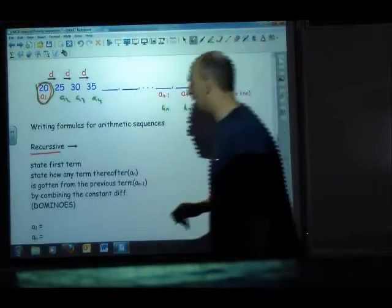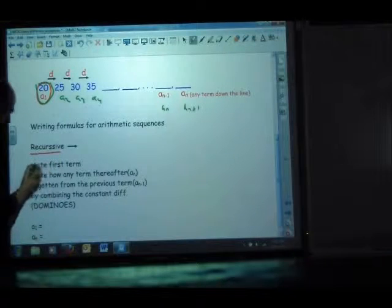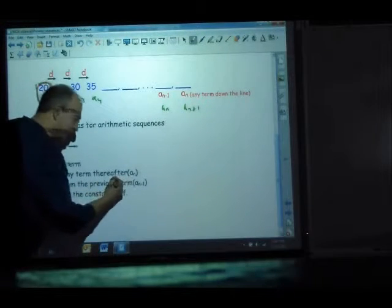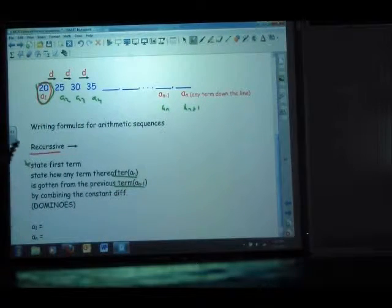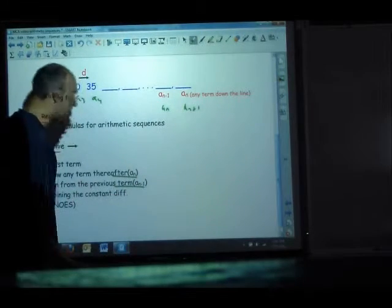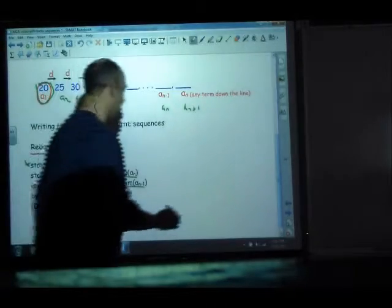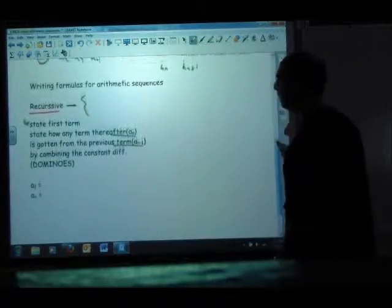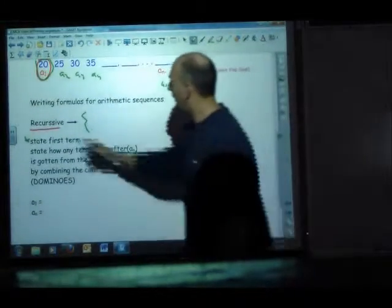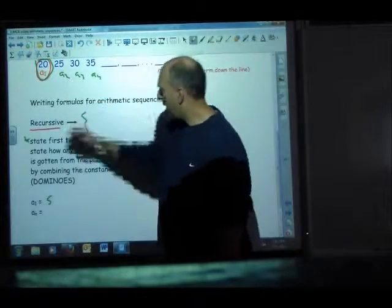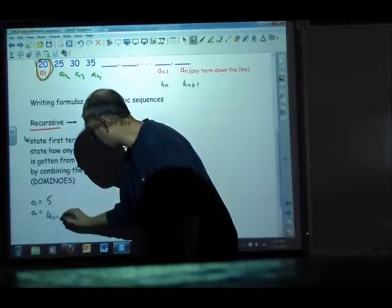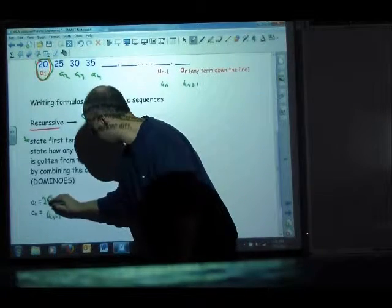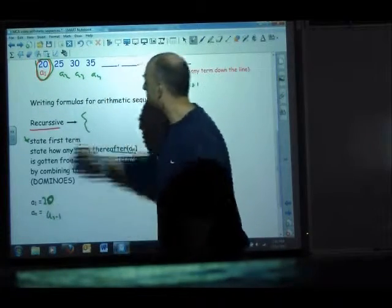But what we'd be saying here is that I have to state the first term, and I've got to say how I'm getting a term down the line using the previous. So, here's how that would look. You will typically see these written like this. A1 is 5, aN is aN minus 1. The previous term, or I'm sorry, a1 is 20. The first term is 20.